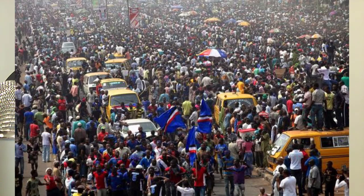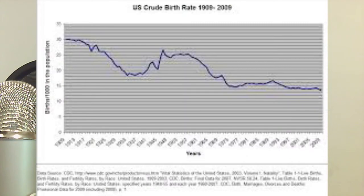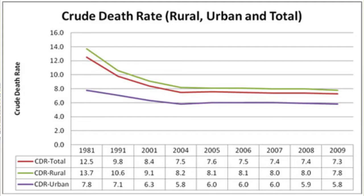A population explosion is a sudden burst in the population in either a certain geographical area or worldwide. Many different factors contribute to population growth. For starters, there is Natural Increase, which is the overall growth of a population, or births minus deaths. Crude Birth Rate is births per year per thousand people. Crude Death Rate is the same, except with deaths — deaths per year per thousand people.